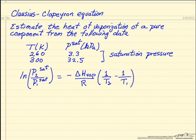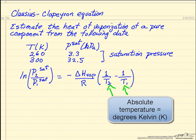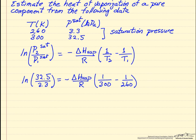And so what we're going to do is substitute the values in where we want to keep in mind these values here must be absolute temperatures. So I've substituted in now the values for 300 being temperature T2 and 260 being temperature T1 over here, and then the corresponding saturation pressures so I can do the calculations.